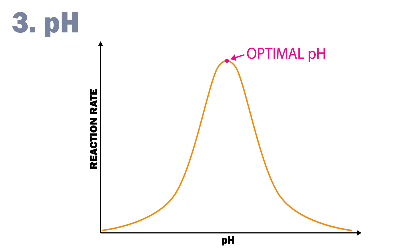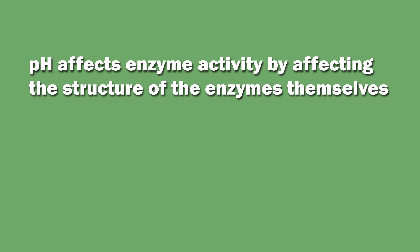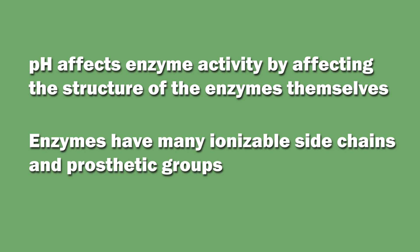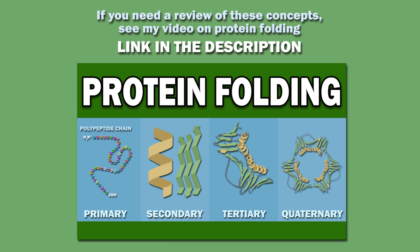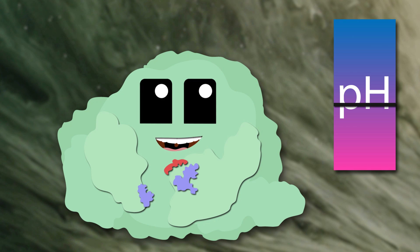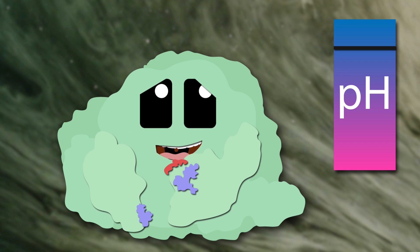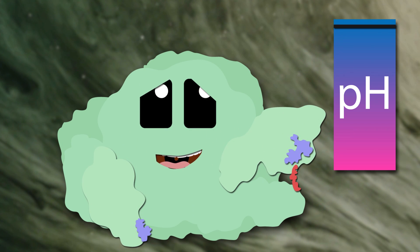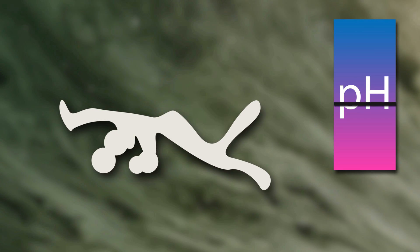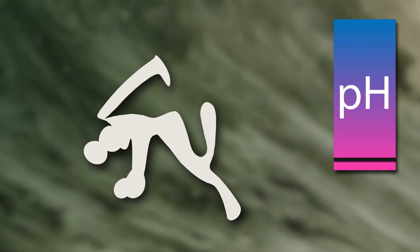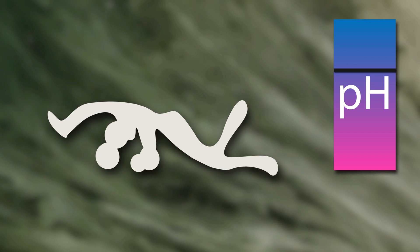Enzymes also typically work best in a narrow pH range. pH affects enzyme activity by affecting the structure of the enzymes themselves. Enzymes have many ionizable side chains and prosthetic groups, which affect the intermolecular bonds which hold together their secondary and tertiary structure. Maintaining the correct secondary and tertiary structure is critical for the proper alignment and functioning of the active site. Outside of an optimal pH range, changes to ionizable side chains can break bonds holding together secondary and tertiary structures, causing the active site to fall apart and decreasing enzymatic activity. In addition, the substrate binding to the enzyme might have its own ionizable side chains, which can also be affected by pH.